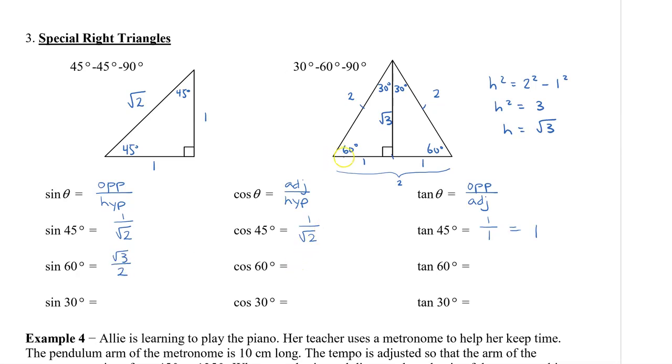Cosine 60 degrees, we have the adjacent, which is 1, and the hypotenuse, which is 2. Tangent 60 degrees is opposite, so root 3 divided by 1, which equals just root 3.